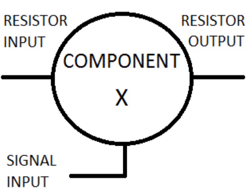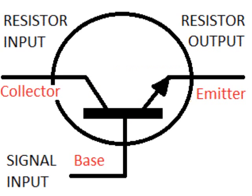So let's take another look at our component X here and redraw it. This is our component X as we know it today, in the NPN flavor. The resistor input on the left, the resistor output on the right, the emitter, the signal input, we call the base. That's our transforming resistor.